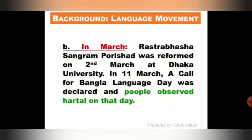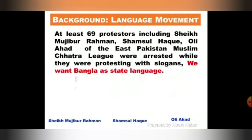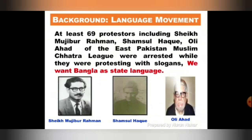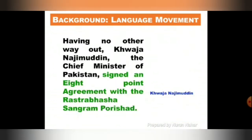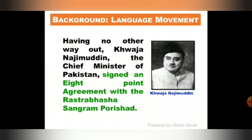In March, Rashtrabhasa Sangram Parishad was reformed on 2nd March at Dhaka University. On 11th March, a Bangla Language Day was declared and people observed hartaal. At least 69 protesters, including Sheikh Mujibur Rahman, Shamsul Haq, and Oli Ahad of the East Pakistan Muslim Chhatra League, were arrested while protesting with the slogan 'We want Bangla as state language.' Having no other way out, Khwaja Nazimuddin, the Chief Minister of Pakistan, signed an 8-point agreement with the Rashtrabhasa Sangram Parishad.